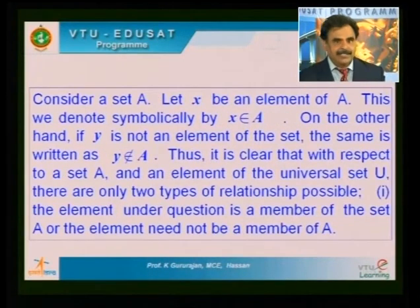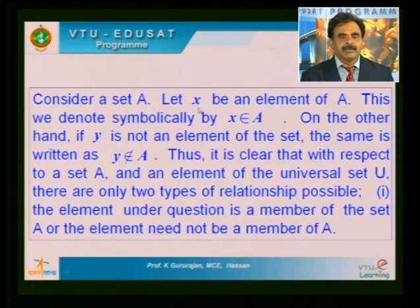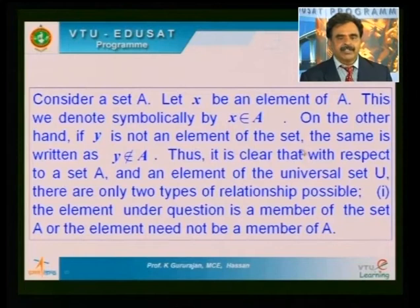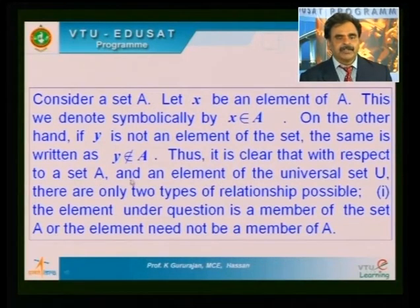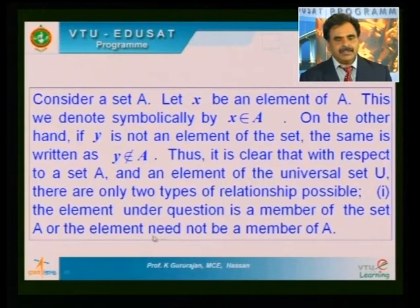If X is an element of A, I represent this by the symbol 'X belongs to A.' On the other hand, if element Y is not present in the set, I use the notation 'Y does not belong to A.' Thus, given a set A and an arbitrary element, there are only two types of relationship possible: the element is either a member of the set, or it is not a member of the set.